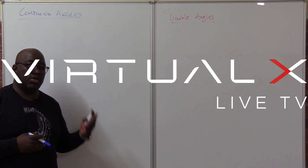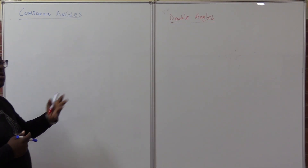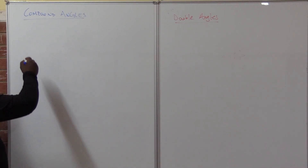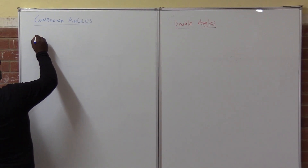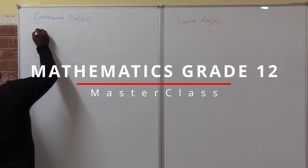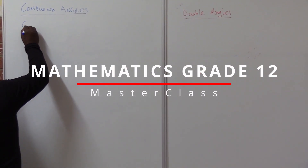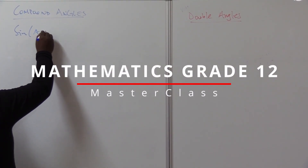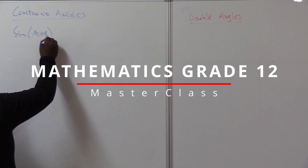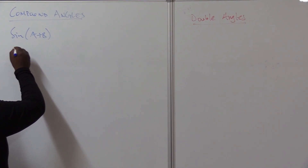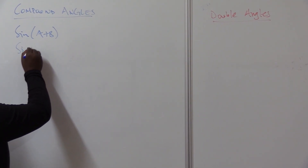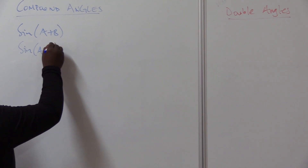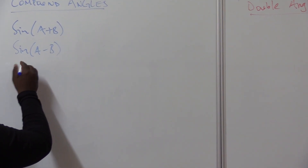I want us to move to another subsection called compound angles and double angles. If I've got sine of (A plus B), what is the answer? If I've got sine of (A minus B), what is the answer?